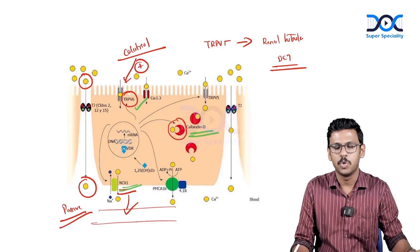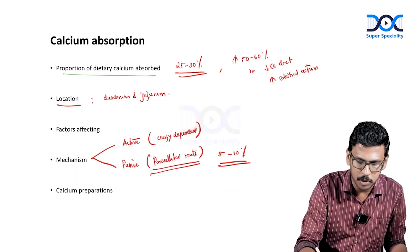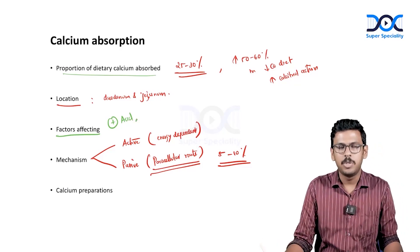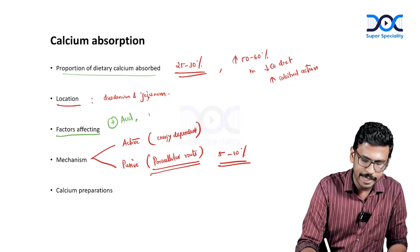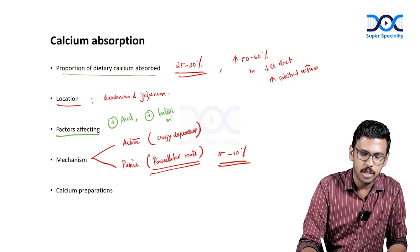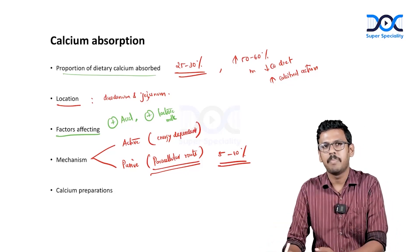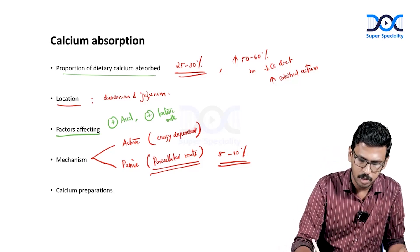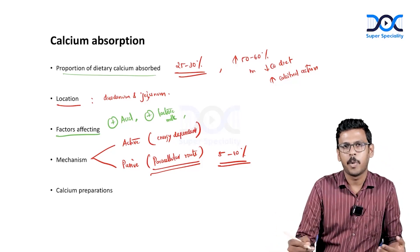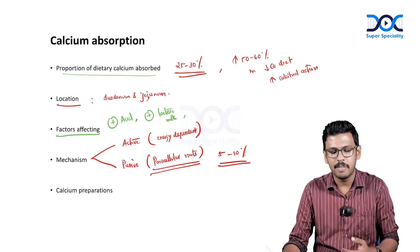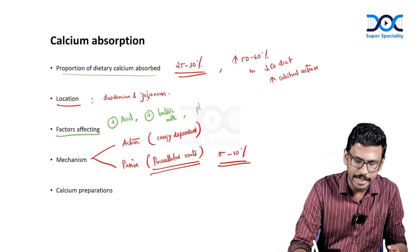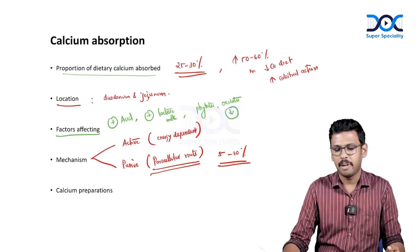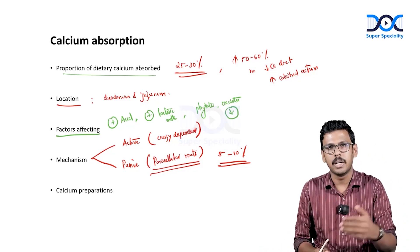Factors affecting calcium absorption: acid in the stomach promotes calcium reabsorption. Lactose in milk is degraded by gut bacteria to lactic acid, reducing pH and promoting calcium absorption in children. Drugs like proton pump inhibitors reduce acid levels and decrease calcium absorption. Dietary components like phytates and oxalates also reduce calcium absorption.